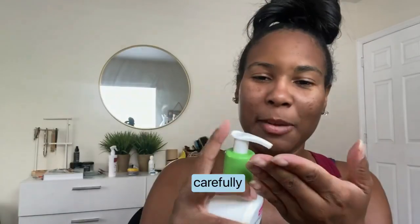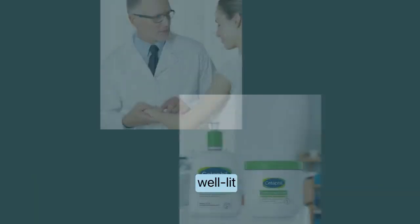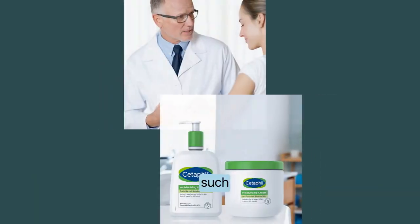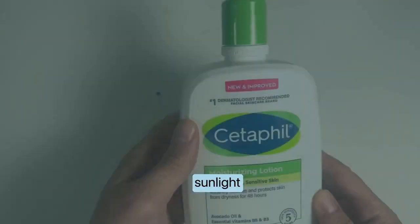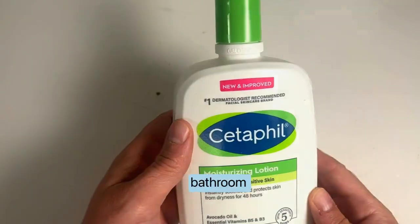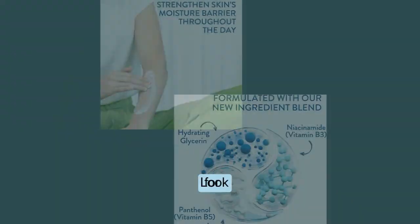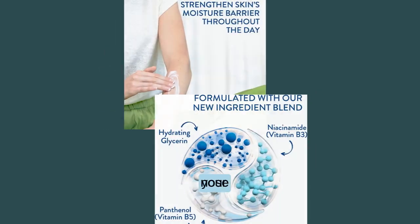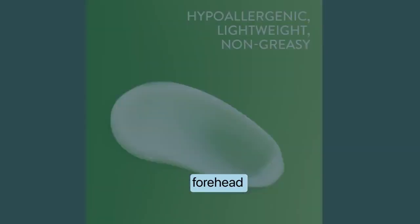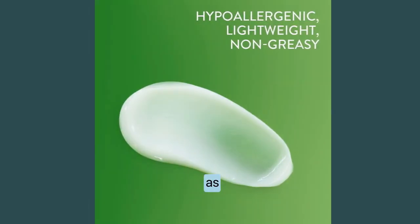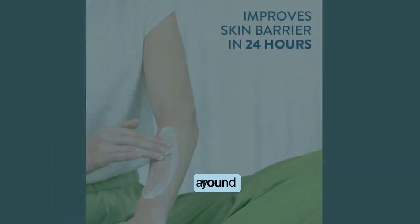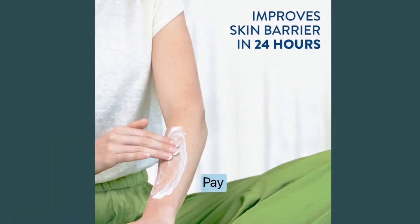Step 3: Observe your skin carefully in a well-lit area, such as natural sunlight or a bright bathroom. Step 4: Look for any shine on your nose, forehead, and chin, as well as any tightness or dryness on your cheeks and around your eyes.